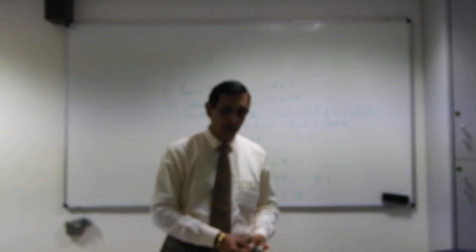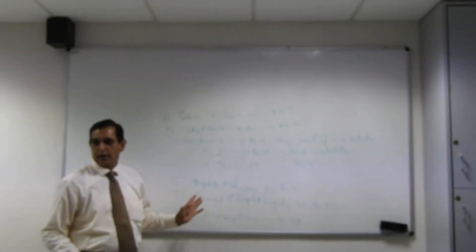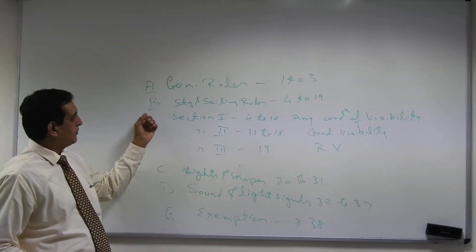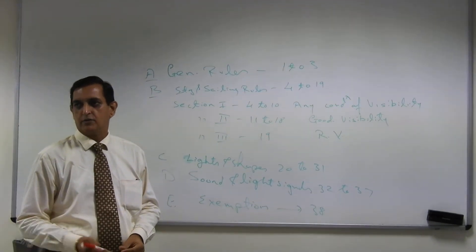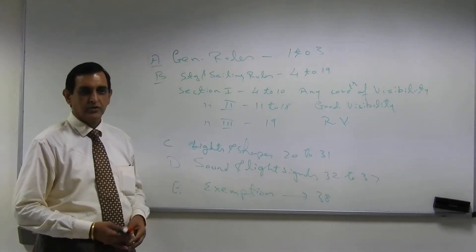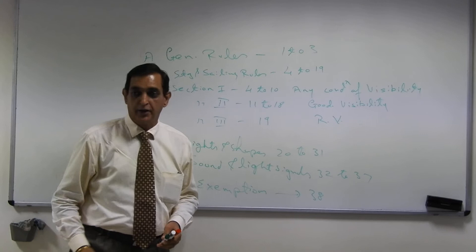So we have got these 5 break up of these rules in these 5 different parts. Part B dealing with 3 sections. We have got to understand all the rules as we go on. And since you have the books, let's say you can start reading with the first two.